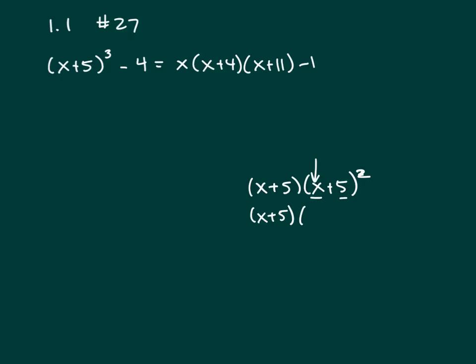What you do is you square the first term, copy down your sign which is positive, you multiply these two together and then double it. So x times 5 is 5x times 2 is 10x. And then square your last term.